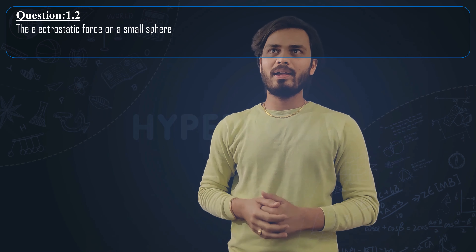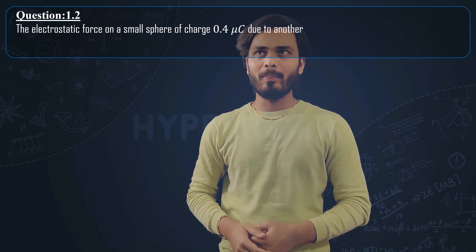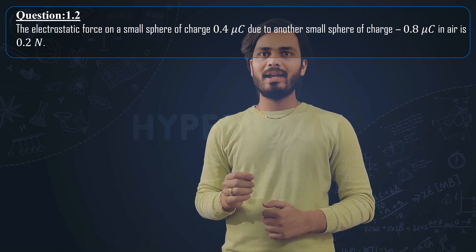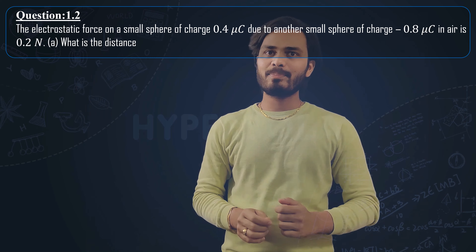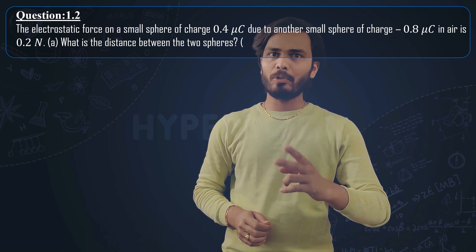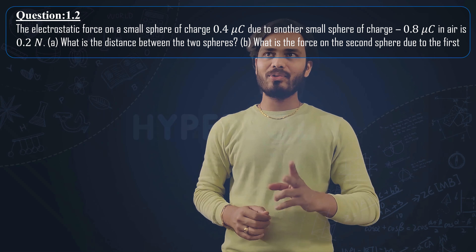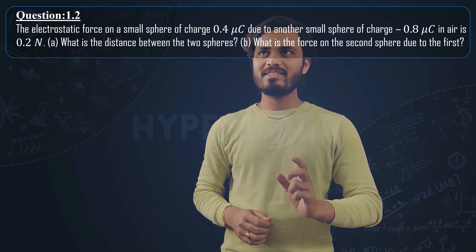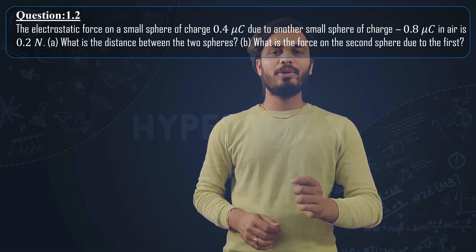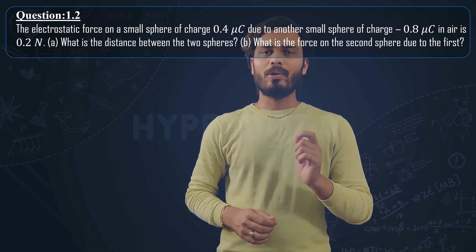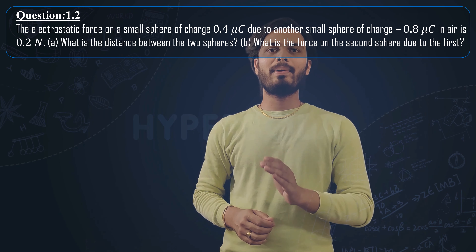Question 1.2: The electrostatic force on a small sphere of charge 0.4 micro coulomb due to another small sphere of charge minus 0.8 micro coulomb in air is 0.2 newton. Two questions are asked: first, what is the distance between the two spheres, and second, what is the force on the second sphere due to the first?